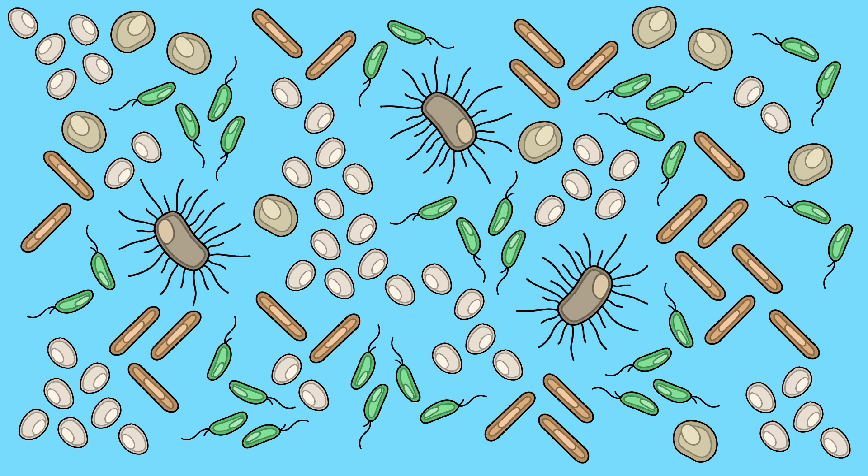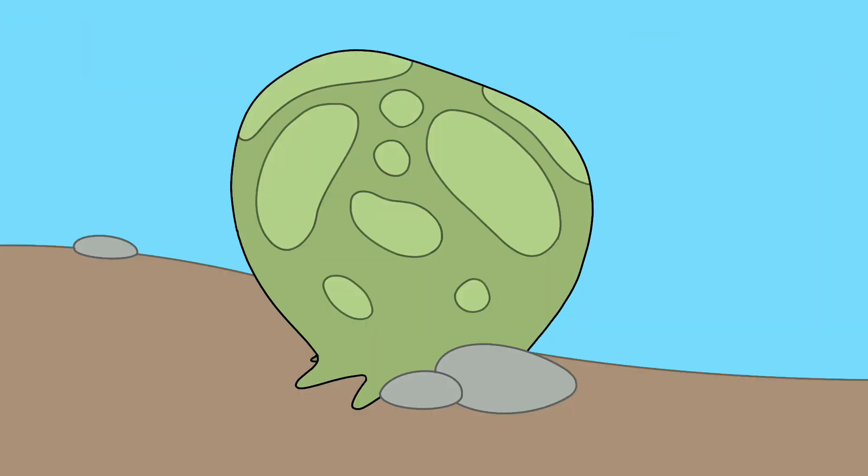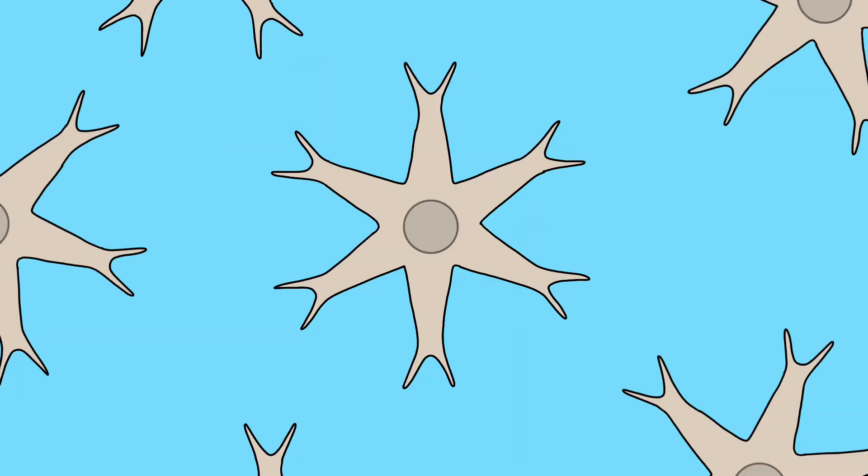Eventually multicellular animals emerge from colonies of cells and three lineages arise. The first are the phytozoans, which are radially symmetrical animals that live in symbiosis with a specific kind of green algae. They have a six-armed larval stage, and when ready to metamorphose, they sink to the sea floor and acquire their algal symbiote to become an adult.